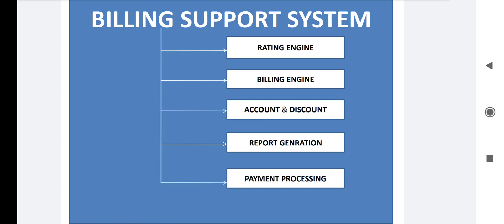The various events are captured by network elements — like voice (call), SMS, MMS, or any internet-related data. The network element captures and generates a CDR and passes it to the billing system, as we have already seen. Rating is a process of determining the charges or the price of a particular event. For example, if you have made a local call of one minute having a cost of one rupee, that is one kind of rating. The rating engine is the part of the billing system that carries out this rating function.